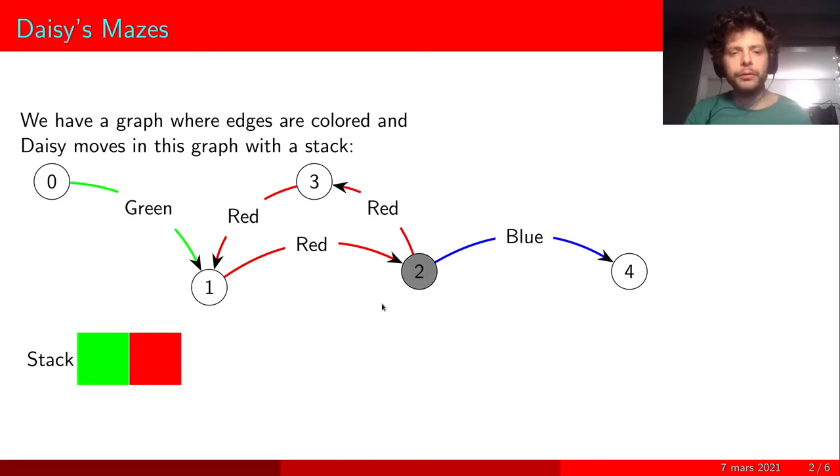Now she can move to node 2 adding a red card on top of her stack. Here she has a choice, either a red edge or a blue edge, but because her top card is red, she will go to node 3 and discard the red card.